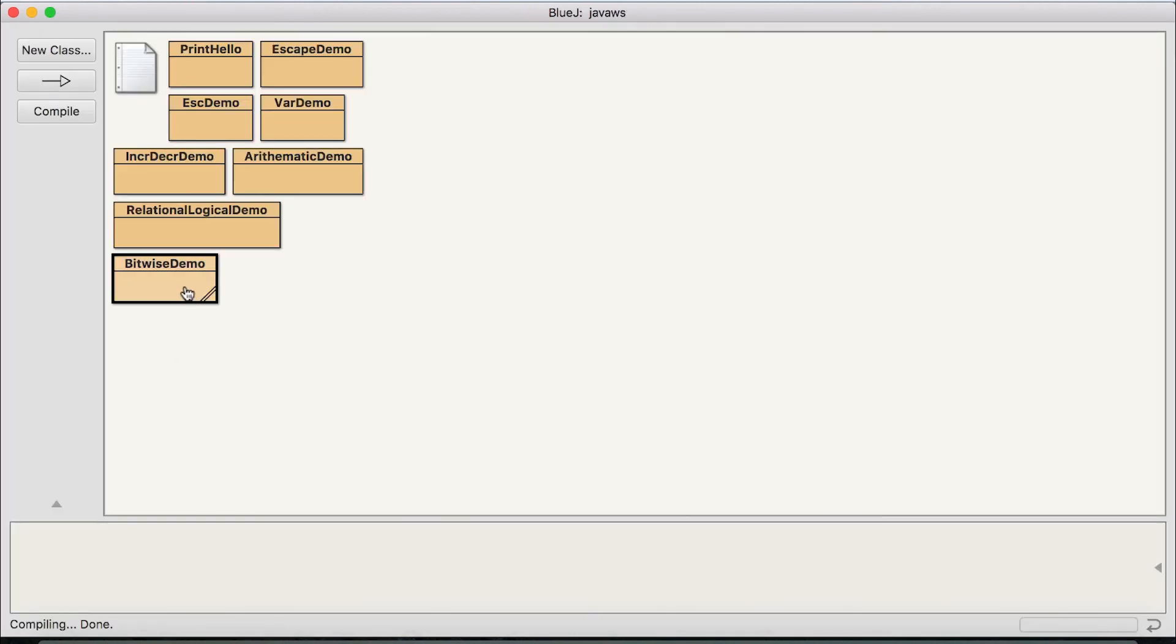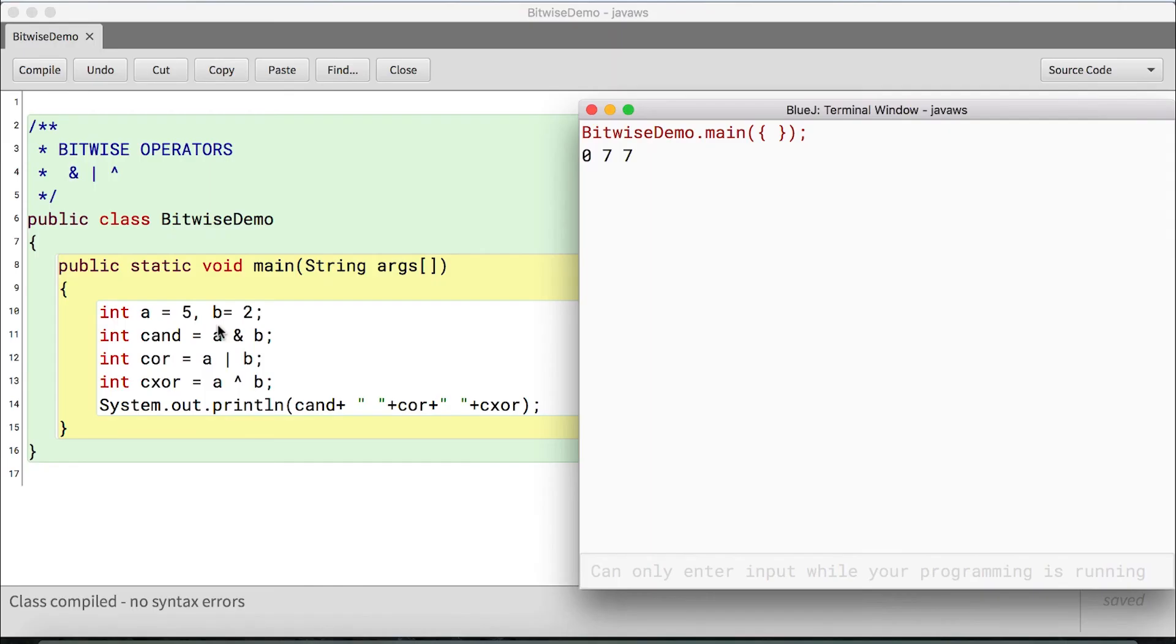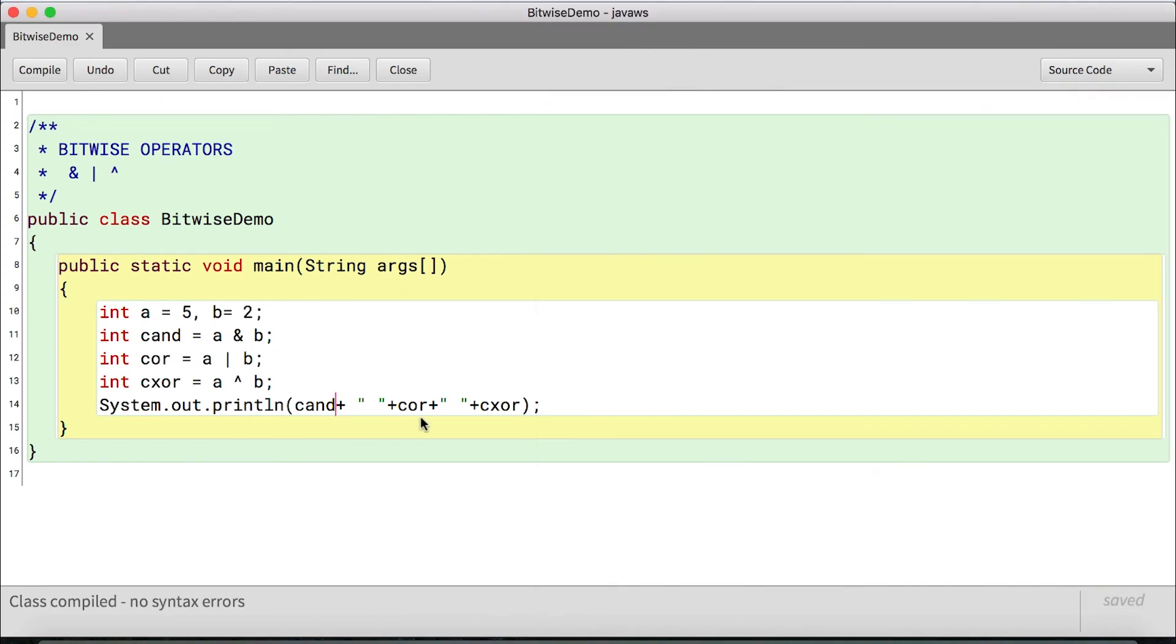Let's go ahead and print and see the output. Let's compile and let's execute. So if you remember, 5 and 2 gives 0, 5 OR 2 gives 7, 5 XOR 2 also gives 7.